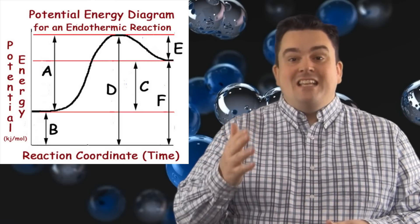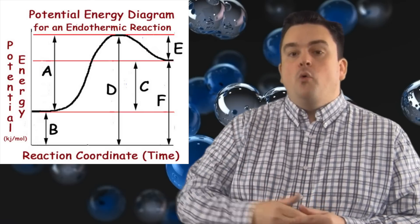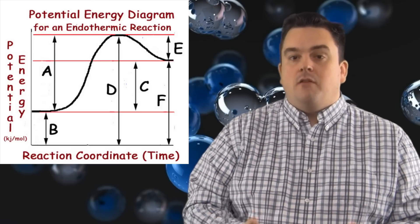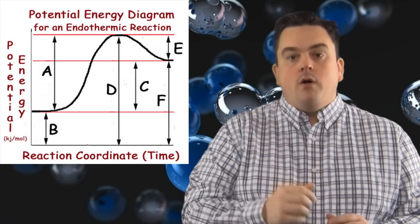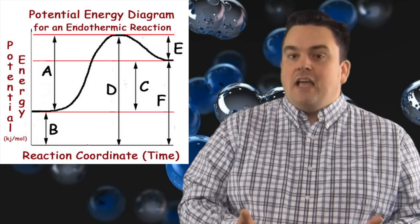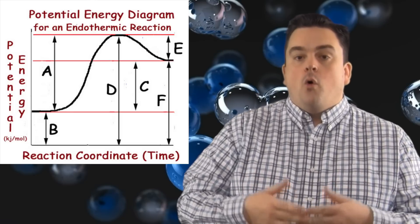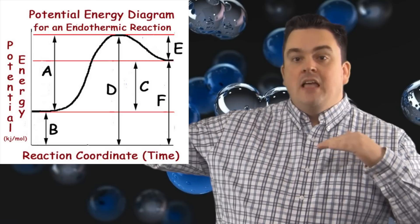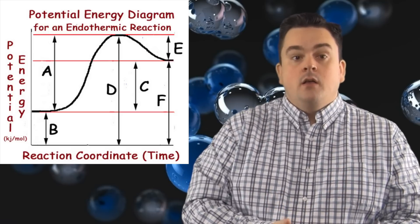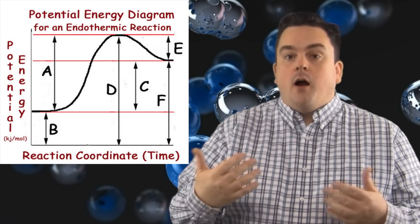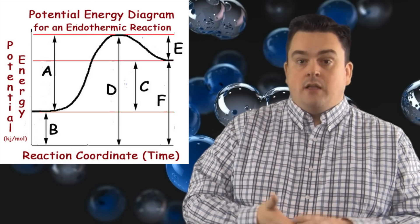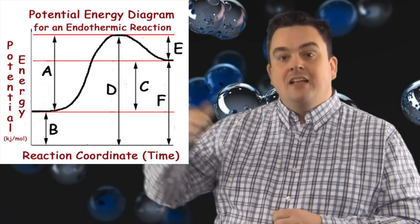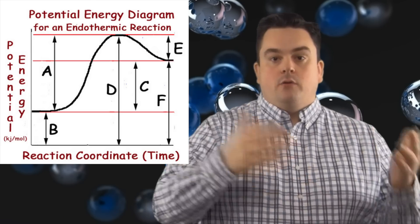We always end with products, which means letter F is the total potential energy of our products. Letter D, the tallest, goes all the way to the top — that's where our activated complex is, representing its total potential energy. Letter C is the delta H, or enthalpy, or heat of the reaction — always the difference between the products and the reactants, where you start and where you end. Letters A and E are both activation energies: letter A is for the forward reaction going up the hill, and letter E is for the reverse reaction going up that hill in the reverse direction.